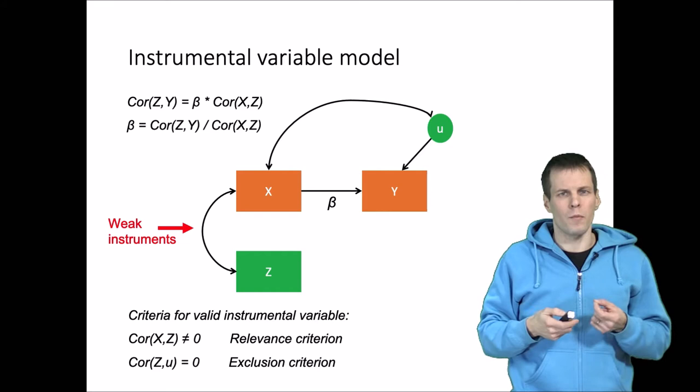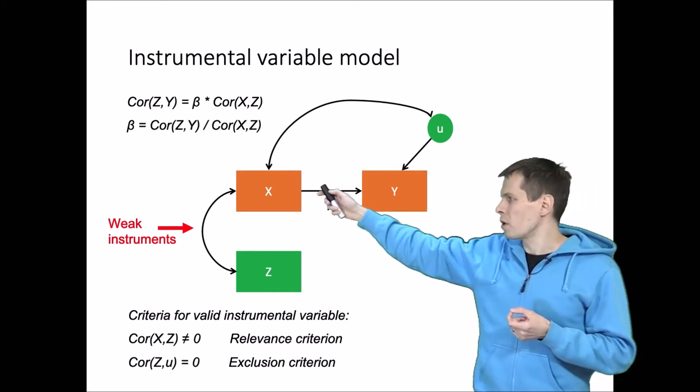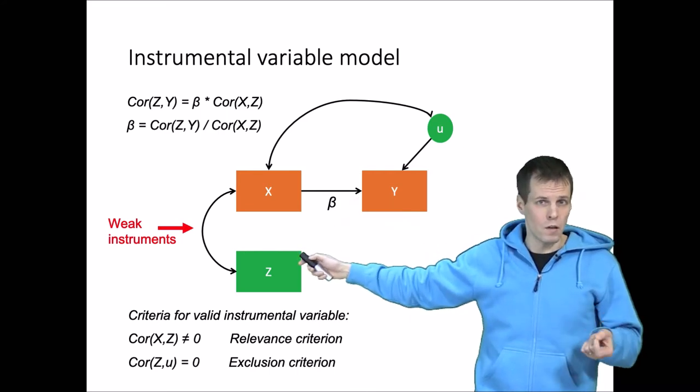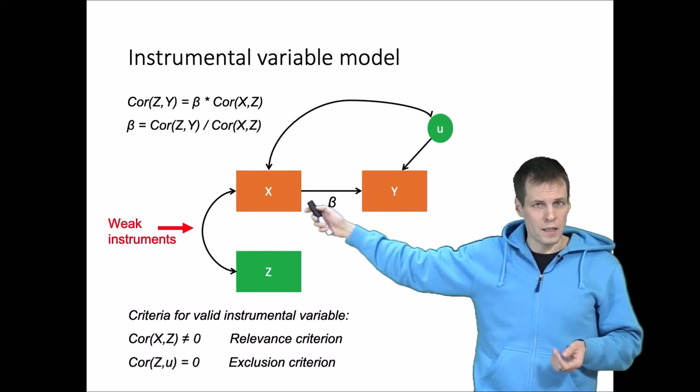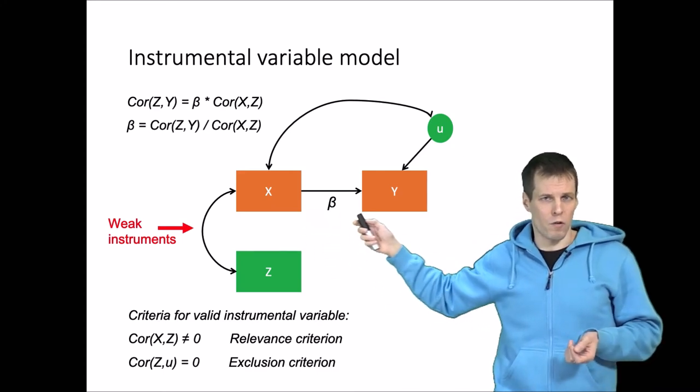Another way of thinking about it in non-mathematical terms is that we are trying to say something about the x and y relationship using z, and if z is not strongly correlated with x, then it cannot provide as much information about the x-y correlation either.